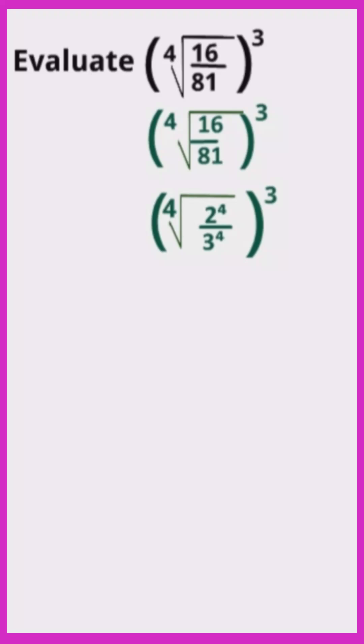Here's the neat trick. When we take the fourth root, those 4s cancel out. So the fourth root of 16 over 81 is simply 2 over 3 raised to the power of 3.